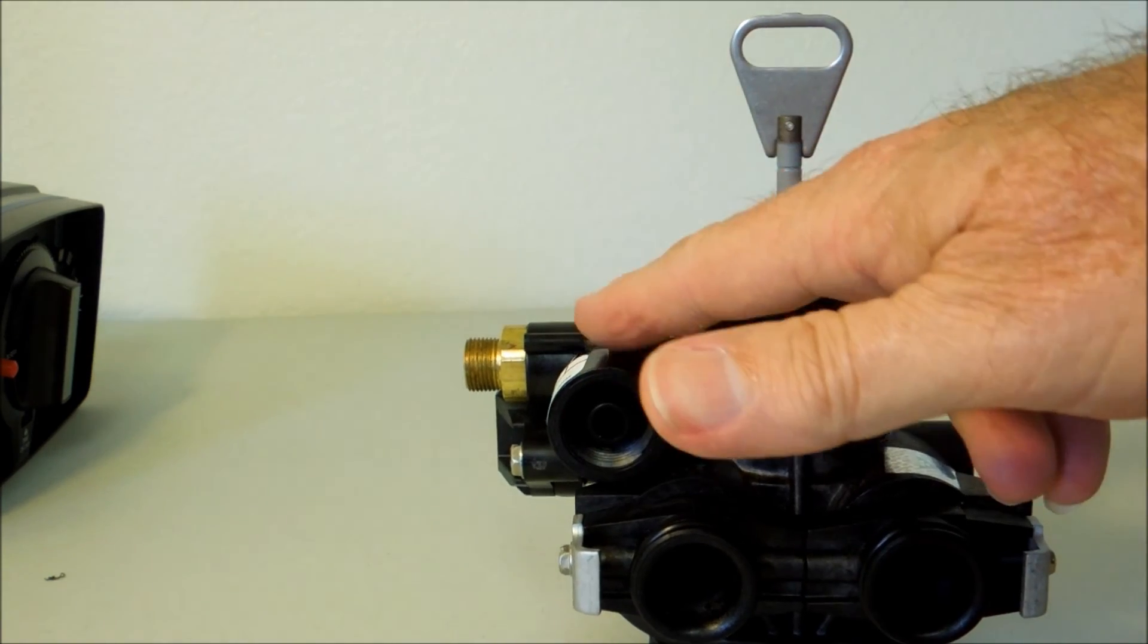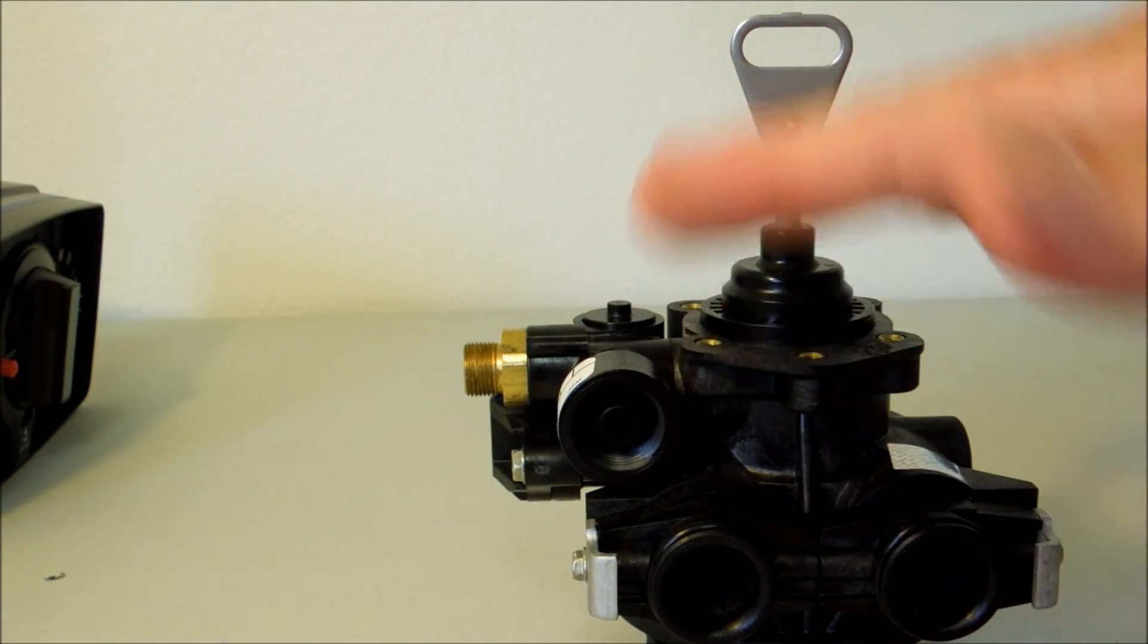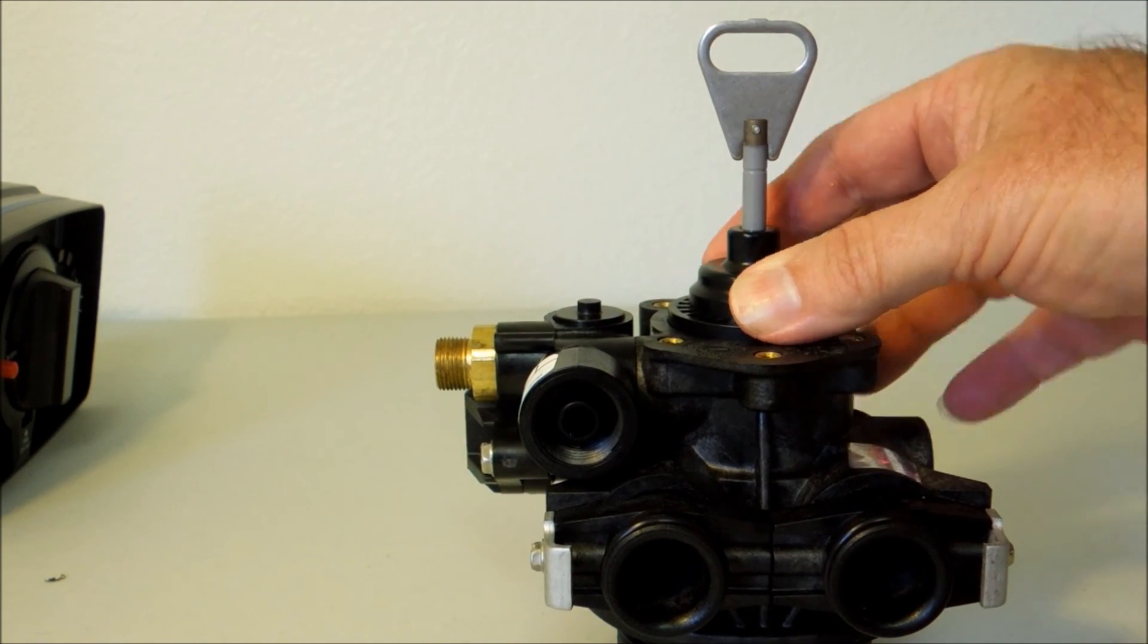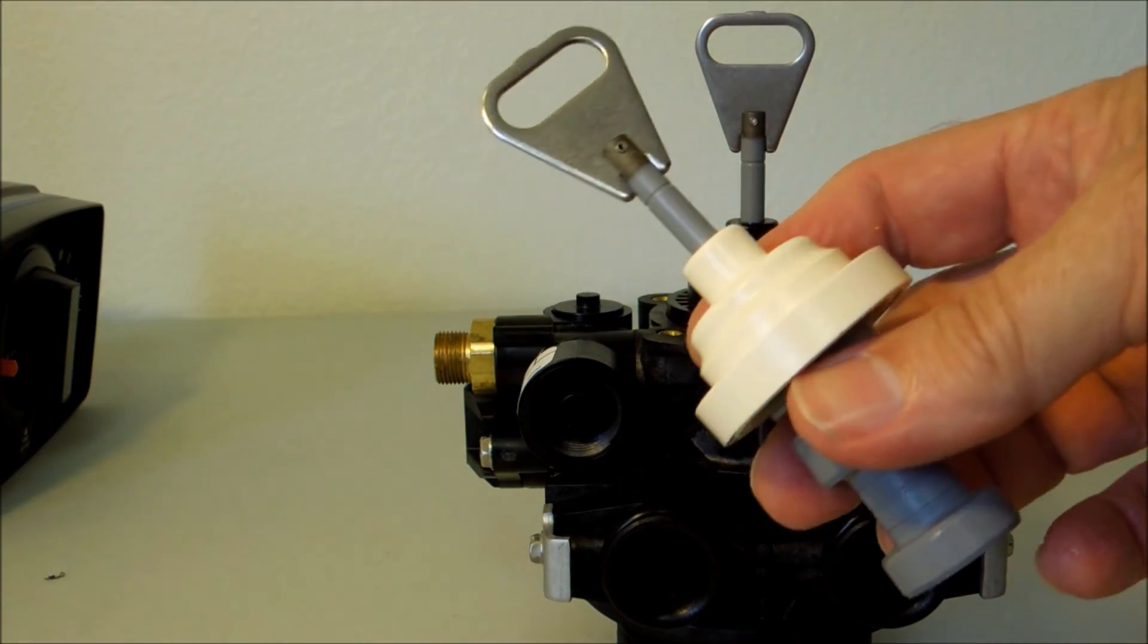You remove the brine valve because you're not using any brine, not sucking anything out. And we're putting in the black top filter piston because it backwashes a little longer than the white top softener piston that was in there.